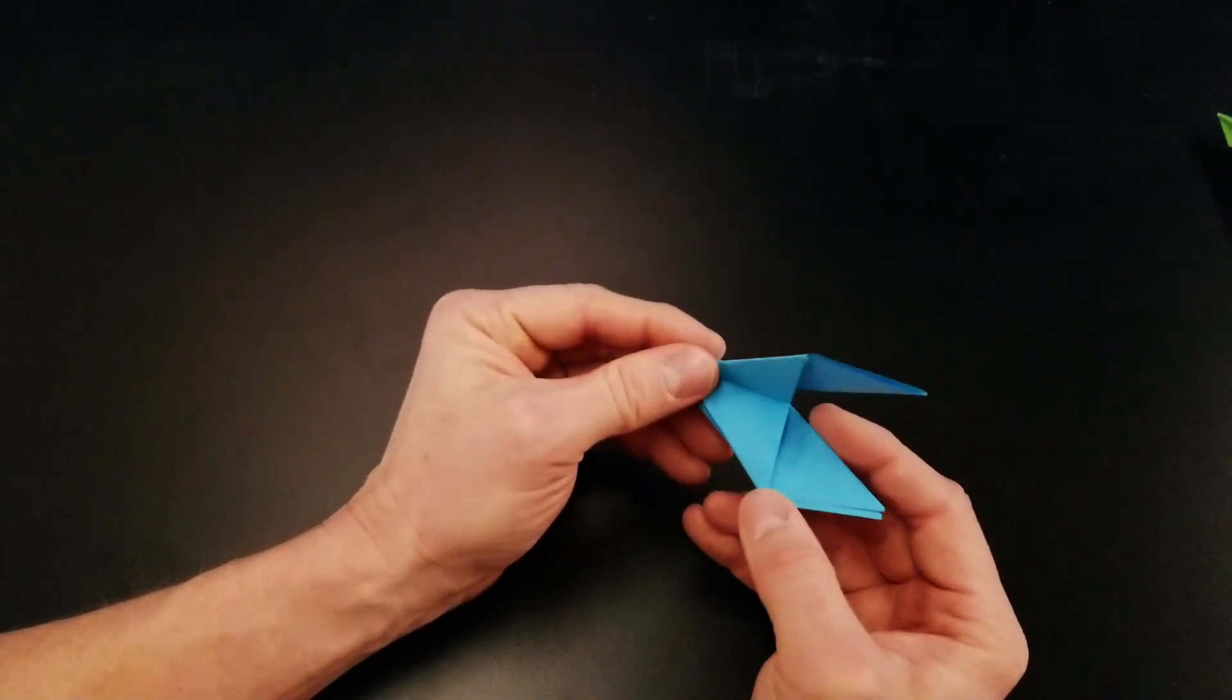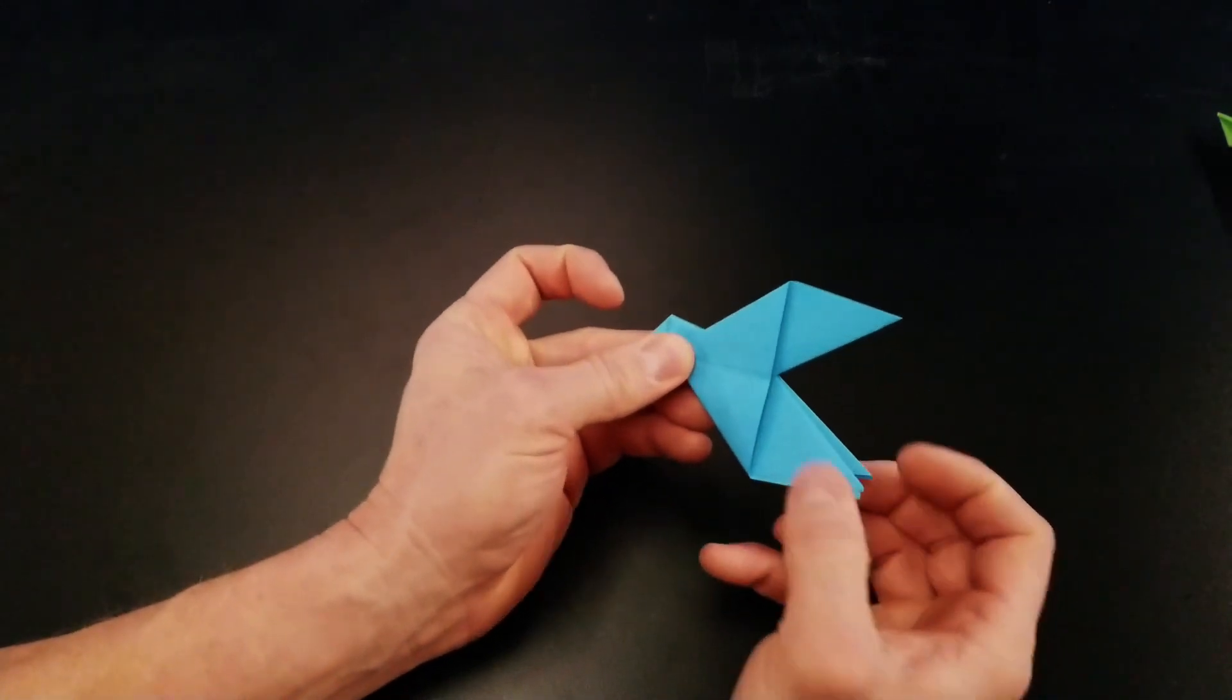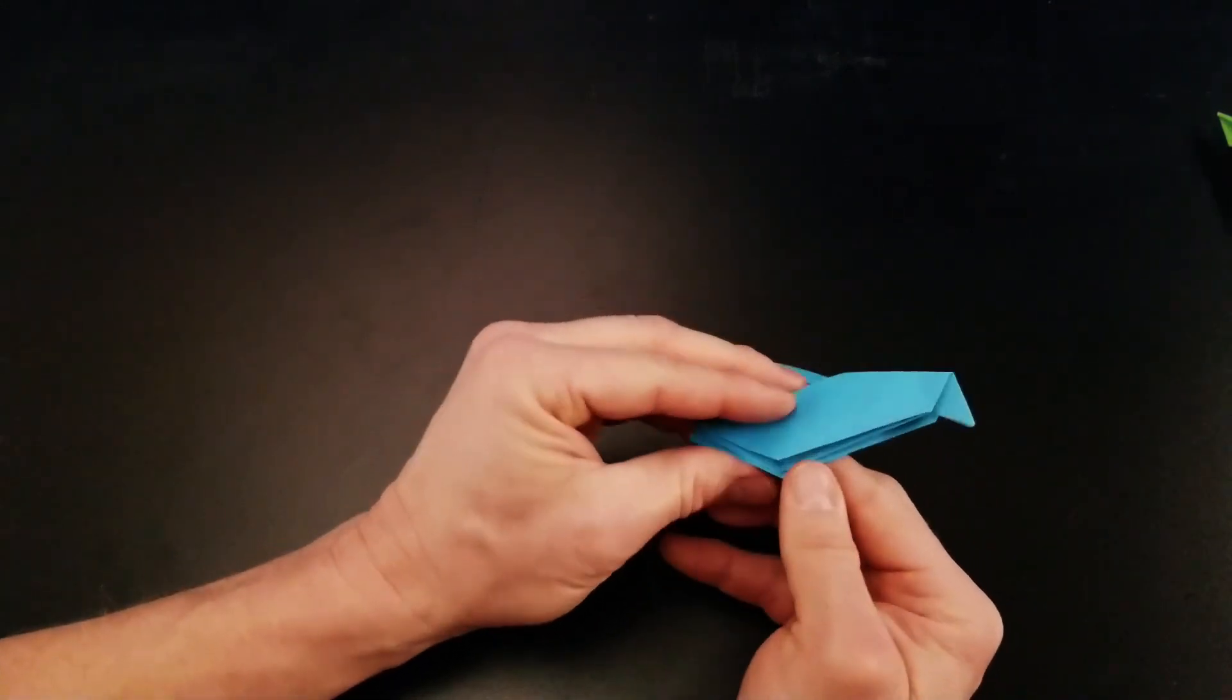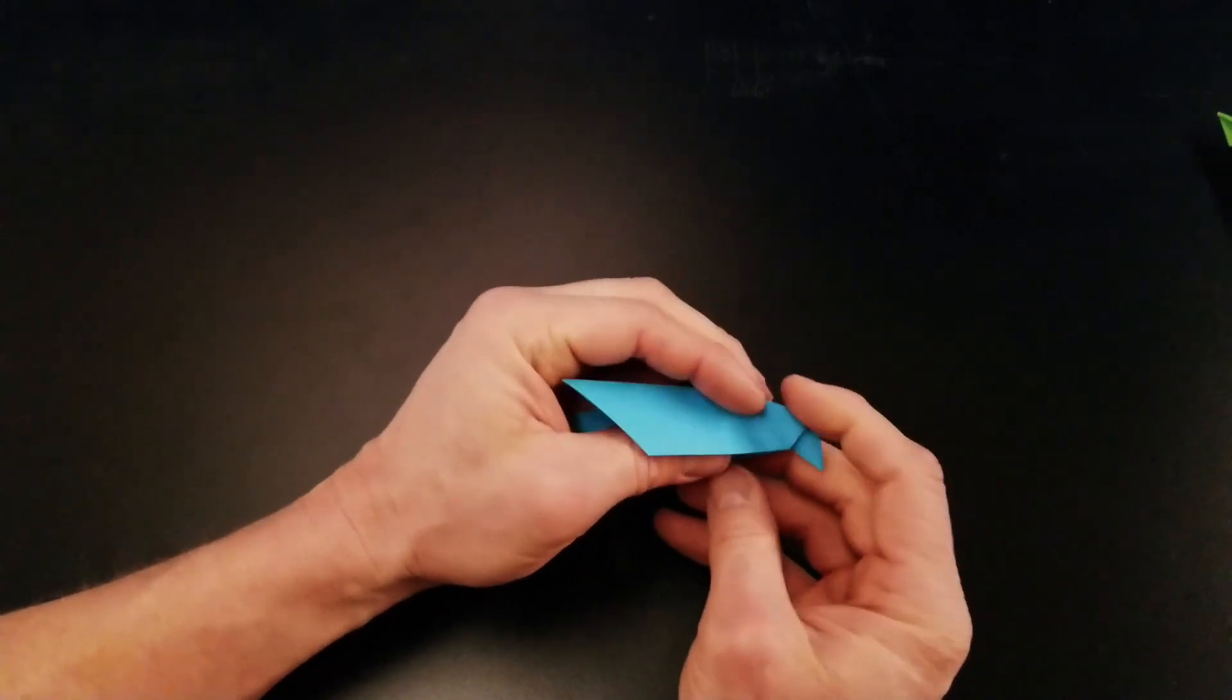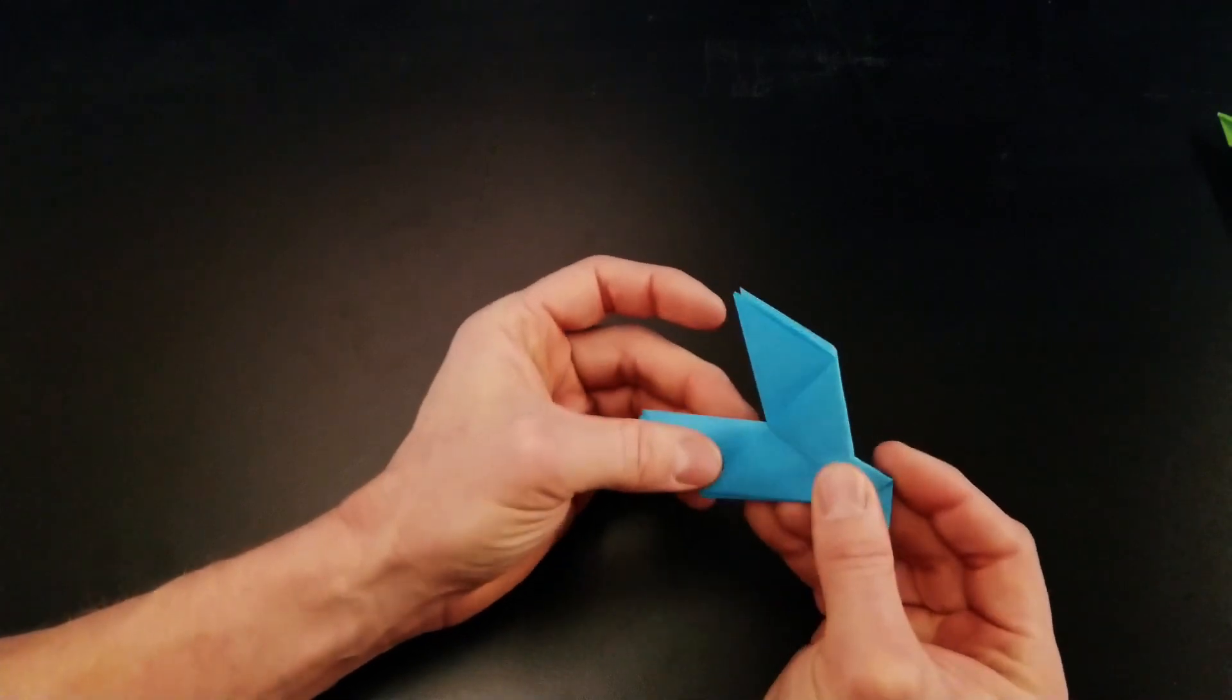Now I'm going to lift this upper wing, fold that. Do the same thing to the other side. Our wings should line up or they should be very close.